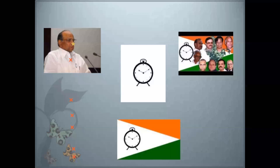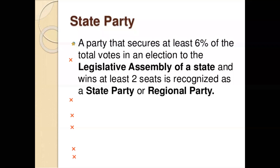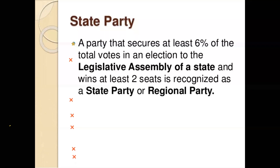Next is the state party. A party that secures at least 6% of total votes in a state legislative assembly election and wins at least two seats is recognized as a state party or regional political party. This is the minimum requirement to become a state-recognized political party. If any political party does not get 6% votes in the legislative assembly but wins at least two seats, such parties are also considered state or regional political parties.